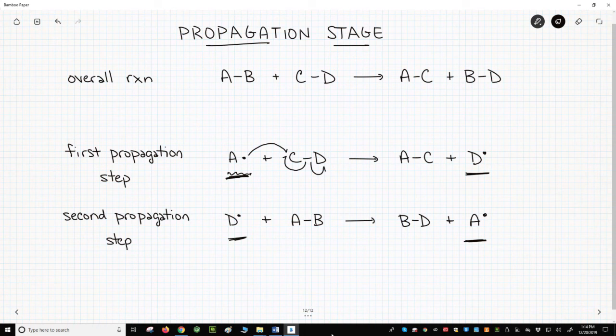The movement of each electron is shown. Note that the first step forms a new radical, D·. We then begin the second step with this same radical.